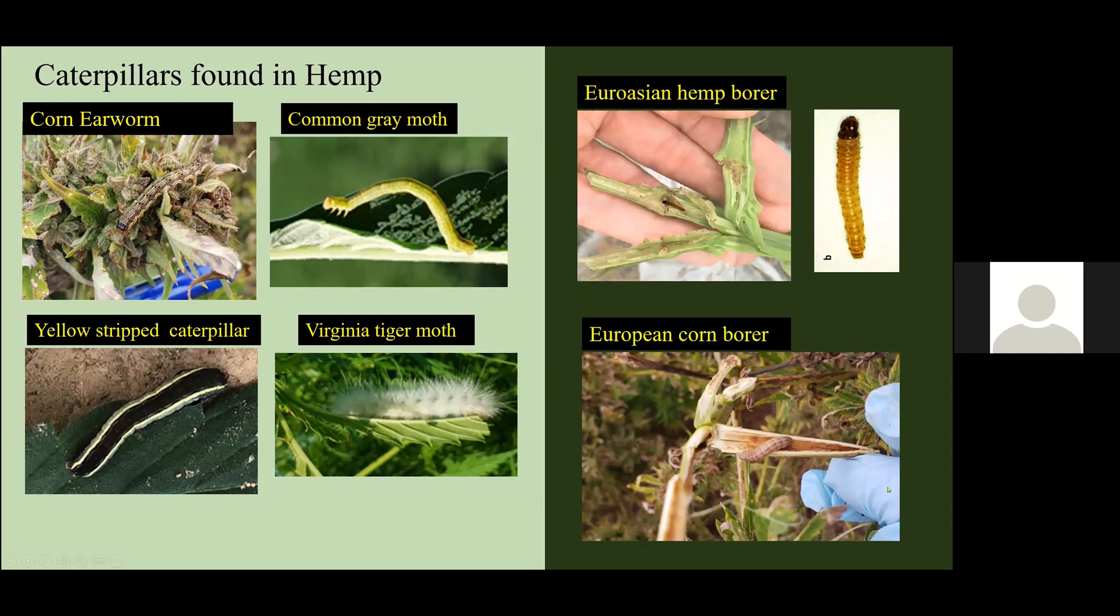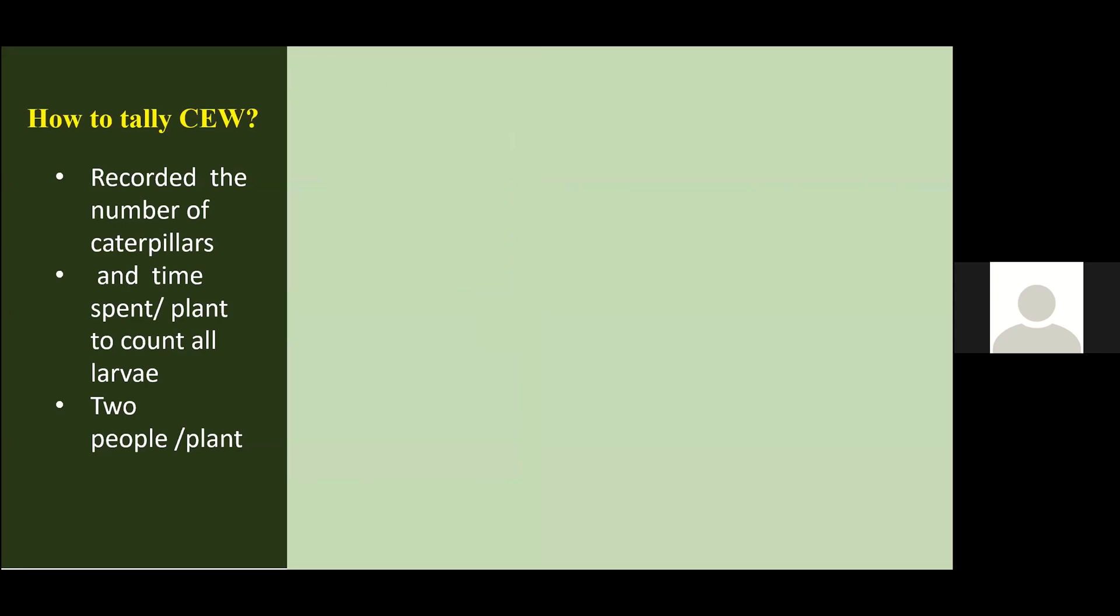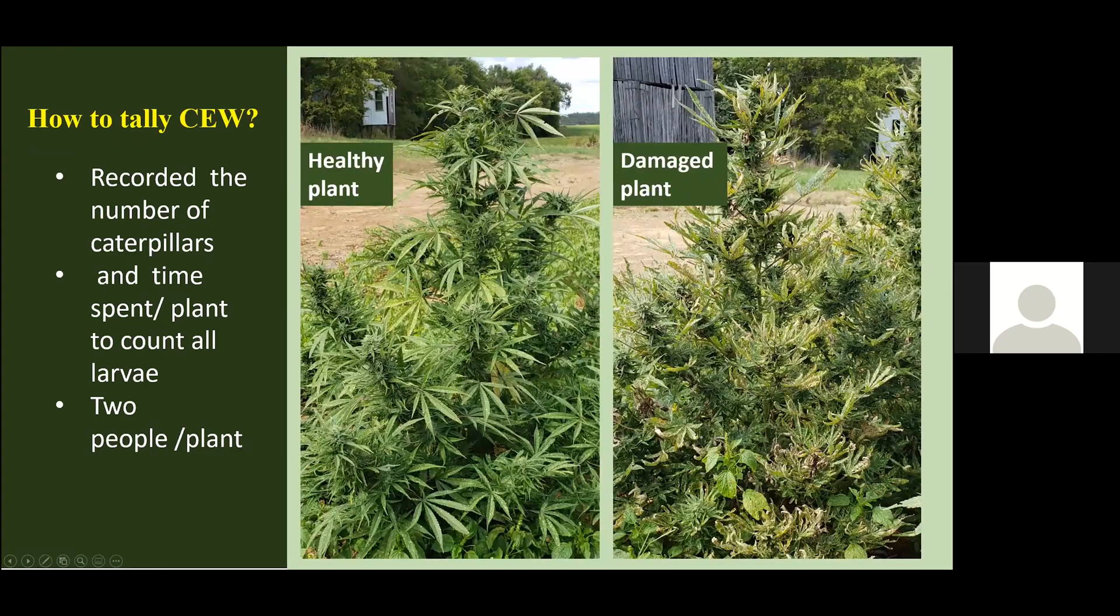We are learning how to tally these insects for aphids or russet mites in hemp. Remember that hemp is a very high value plant. It's three dollars per plant. You cannot go to the field and sweep a net and destroy the plant. While we did this, we recorded the numbers of caterpillars checking for the entire plant. We also recorded the time spent per plant per larvae. We have two people per plant. This is the kind of plants that we are calling healthy plant versus damaged plant.